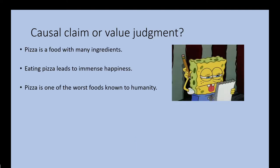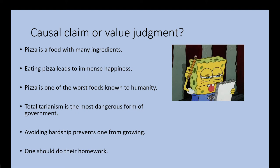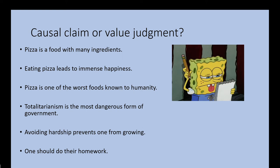I'm going to put some examples on the screen — pause the video, evaluate them yourself, and when you're done, unpause and I'll let you know the answers. Hopefully you've evaluated these. Number one is a trick — 'pizza is a food with many ingredients' is a descriptive claim, not a causal claim or a value judgment. 'Eating pizza leads to immense happiness' is a causal claim, with an implicit value judgment. 'Pizza is one of the worst foods known to humanity' is a clear value judgment. 'Totalitarianism is the most dangerous form of government' — value judgment. 'Avoiding hardship prevents one from growing' — causal claim with implicit value judgment. 'One should do their homework' — value judgment.